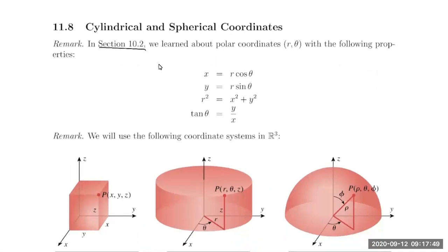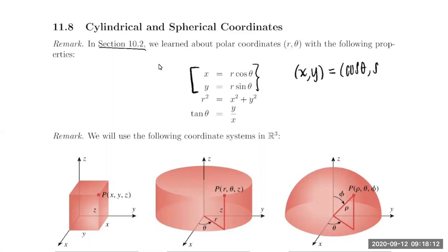Way back in Section 10.2, we learned about polar coordinates. If you'll recall, x and y were related to r and theta by x equals r cosine theta and y equals r sine theta. These should look very familiar because on the unit circle, the coordinates x, y are synonymous with cosine theta, sine theta. The r value is missing because on the unit circle the radius r is precisely 1, but we can extend this to any radius using r as a scalar.